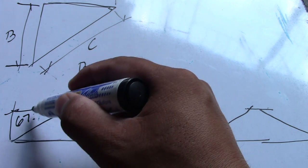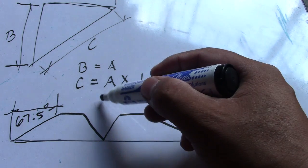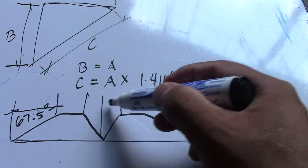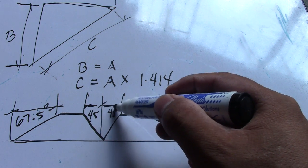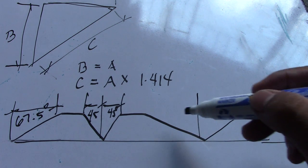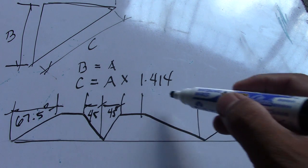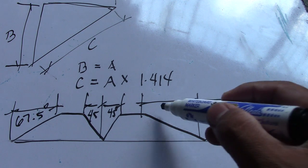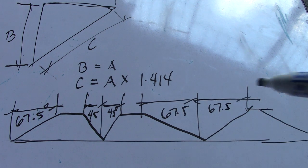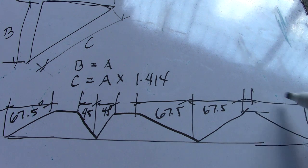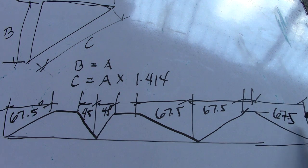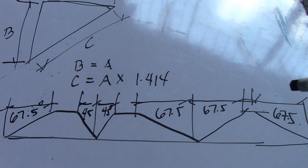This is 67.5 degrees. And this dimension, this is both 45 degrees. The next dimension is also 67.5 degrees. And the last dimension is also 67.5 degrees. So this is the layout for how to make an iron bracket at 45 degrees.